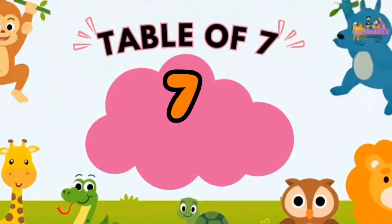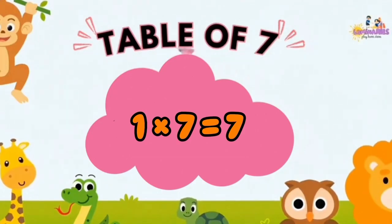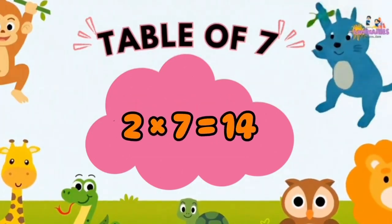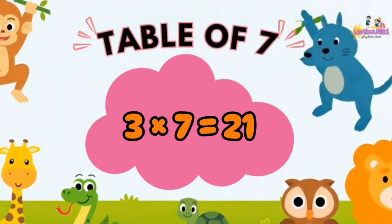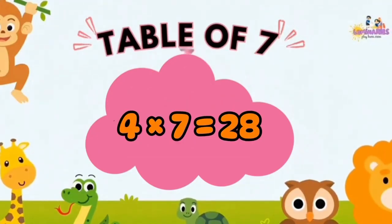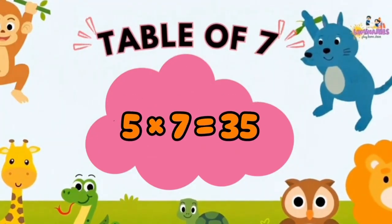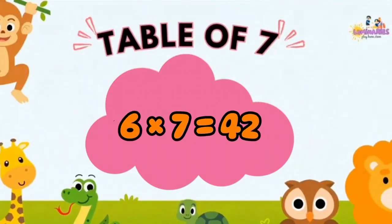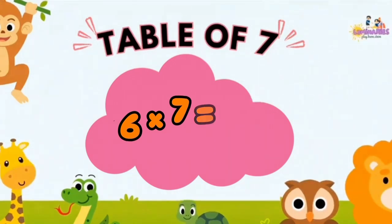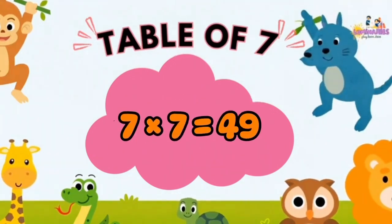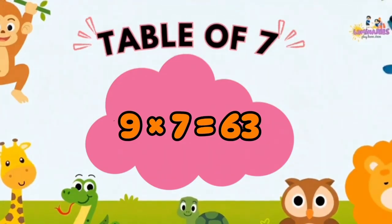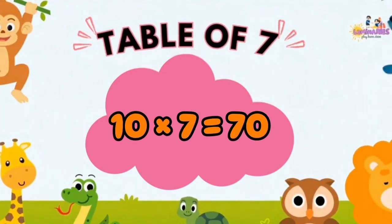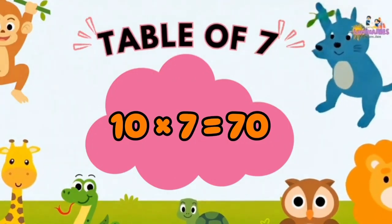Table of 7. 1 x 7 is 7. 2 x 7 is 14. 3 x 7 is 21. 4 x 7 is 28. 5 x 7 is 35. 6 x 7 is 42. 7 x 7 is 49. 8 x 7 is 56. 9 x 7 is 63. 10 x 7 is 70.